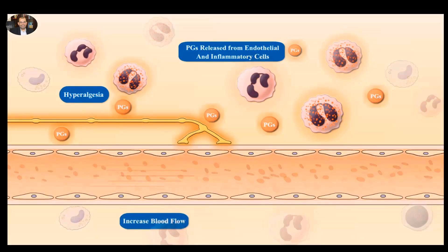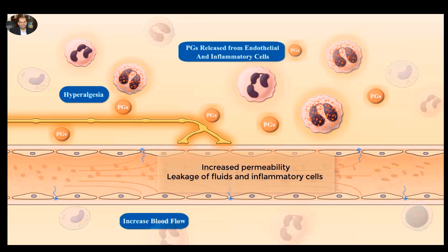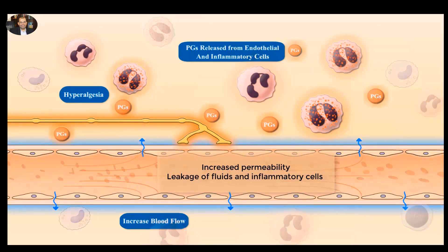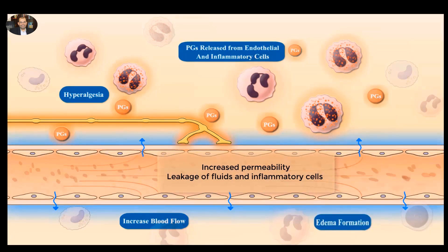Additionally, prostaglandins increase blood flow and vascular permeability, which results in increased leakage of fluids and inflammatory cells towards extravascular compartments, leading to edema formation. Edema, or swelling, is the fourth cardinal sign of inflammation.